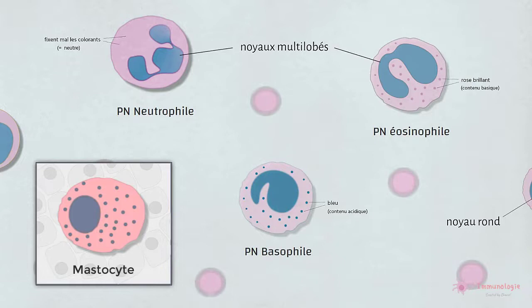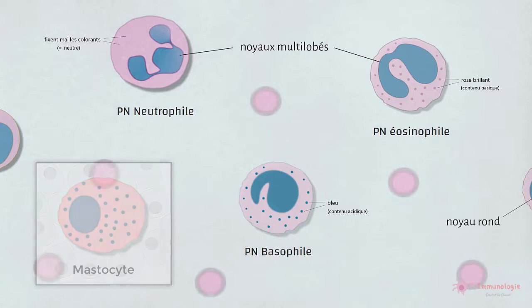Et enfin, les mastocytes ont un grand nombre de granules cytoplasmiques dont le contenu est similaire à celui des granules des basophiles. Ils se colorent également en bleu.